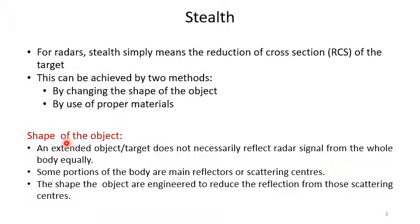By changing the shape of the object: an extended object or target does not necessarily reflect radar signals from the whole body equally. Some portions of the body are main reflectors or scattering centers, and the shape of the object is engineered to reduce reflections from those scattering centers.